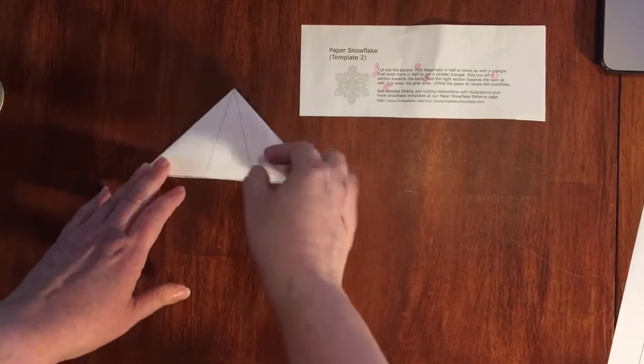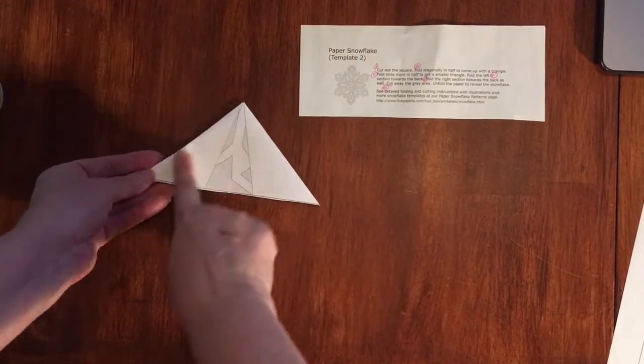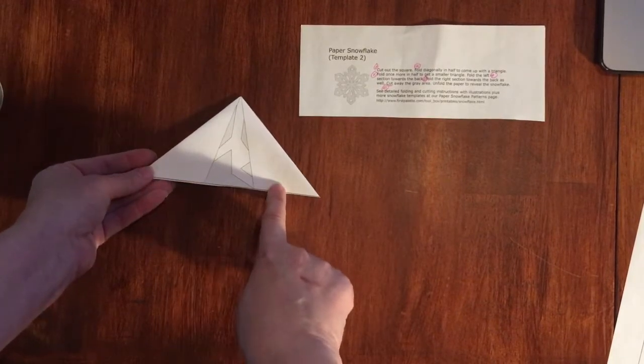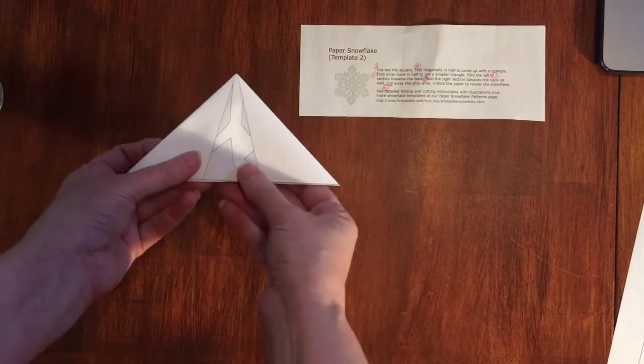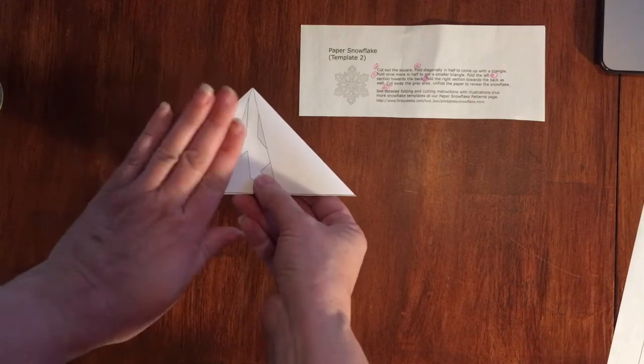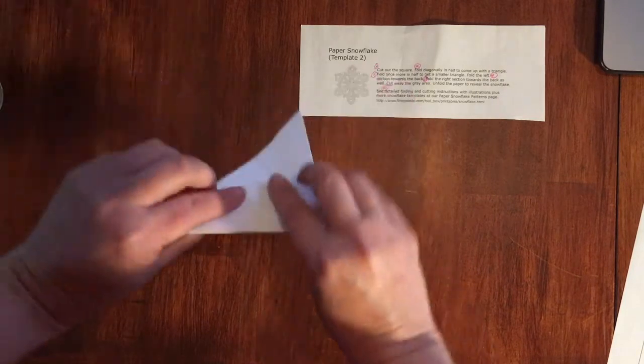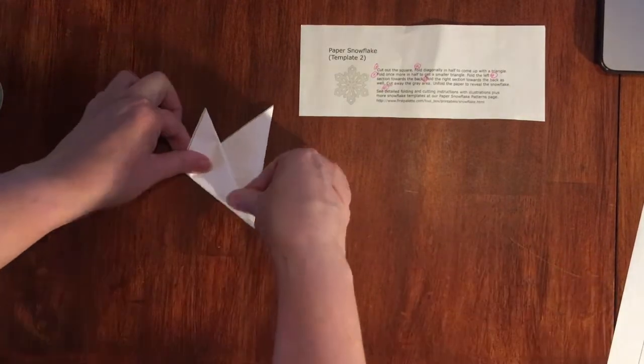So let's take a look at that. I've made my smaller triangle. We're going to consider this our front, and whether you're holding it this way or this way, it doesn't matter. But the section to the left gets folded towards the back. So I'm going to flip it over and use the lines to help me.